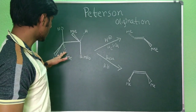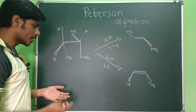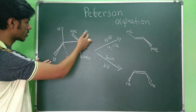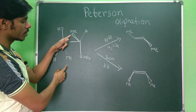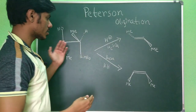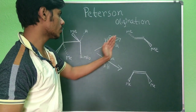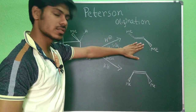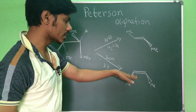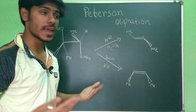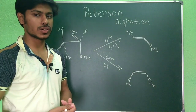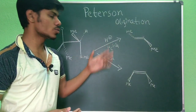For example, we take the erythro isomer of this compound. It is erythro because the similar groups are anti to each other: the two hydrogens are anti, the two methyls are anti, and the silicon group and oxygen group are also anti. Starting from this erythro isomer, if we treat with acid we get the trans alkene, whereas using basic conditions gives the cis product. This is the main feature of this reaction.